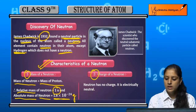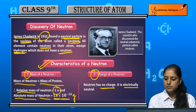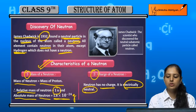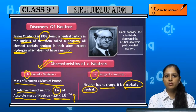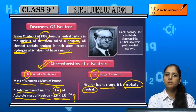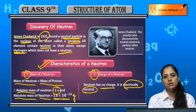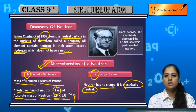Coming to the charge of a neutron — it has no charge. It is electrically neutral. This was all about the discovery of the neutron. We will now compare protons, electrons, and neutrons in our next topic.